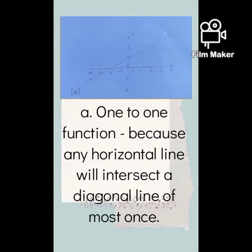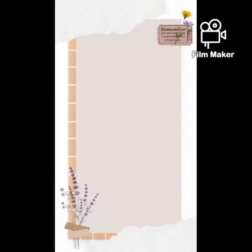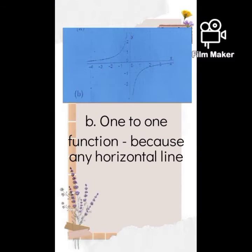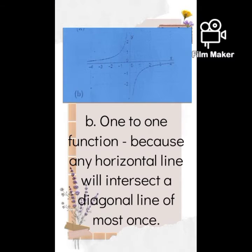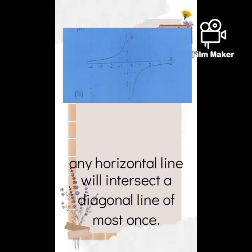Letter B is a one-to-one function. It is the same reason as letter A because any horizontal line will intersect a diagonal line at most once.